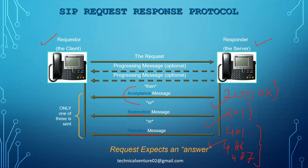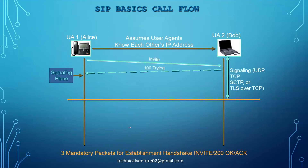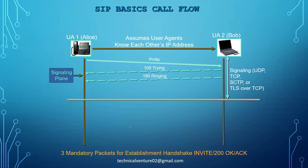In the basic call flow, User Agent 1 (Alice) initiates the request — acting as the client — by sending an INVITE message. User Agent 2 (Bob) then sends '100 Trying', which is our provisional 1xx response. After '100 Trying', Bob sends '180 Ringing', telling User Agent 1 that the phone is ringing. This causes User Agent 1 to play a local ringback tone — that ringback comes from your local phone, not from the remote party's phone.